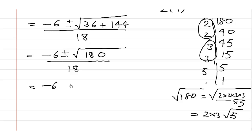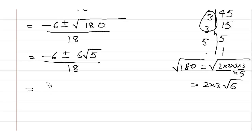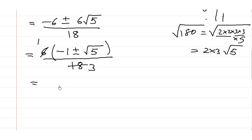We can rewrite this as (-6 ± 6√5) / 18. Now, do not make the mistake of cancelling individual terms separately when there is a plus or minus sign — that is wrong. Whenever there is a multiplication, only then can we cancel. So the idea is to take 6 as a common factor: 6(-1 ± √5) / 18. Now 6 and the bracket are multiplying, so we can cancel: 6 into 3 is 18. This gives (-1 ± √5) / 3.